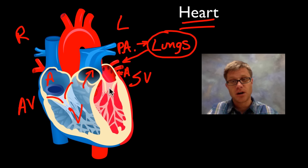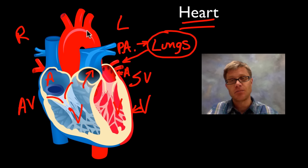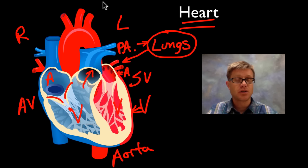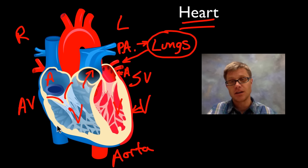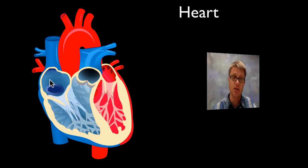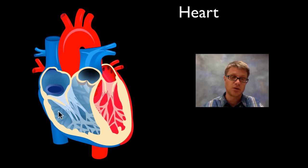From the left atrium, blood flows through the left AV valve down into the left ventricle, and then moves out into the aorta — the big artery. The aorta sends arteries up to the head, then goes to the body, and then comes back again. You should pause the video and see if you can trace the path from the superior and inferior vena cava all the way to the aorta.